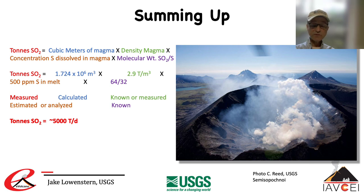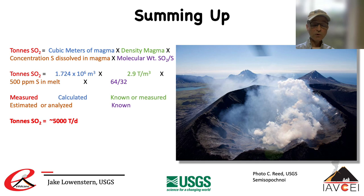The only other pieces of information you need to reproduce that calculation are the density of magma — assumed to be 2.9 tons per cubic meter — and the molecular weights of sulfur and SO2. As for an H2O to CO2 ratio of 100, that implies either very low CO2 in your magma, or that the magma is shallow and therefore losing abundant water, which won't be released normally until the magma is within 1 to 2 kilometers of the surface.